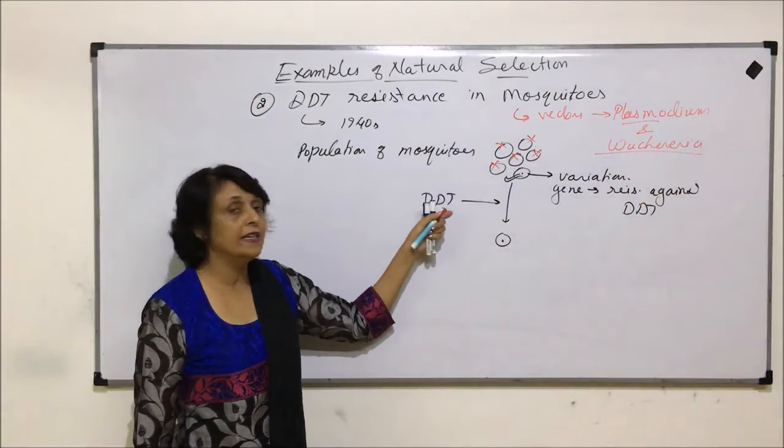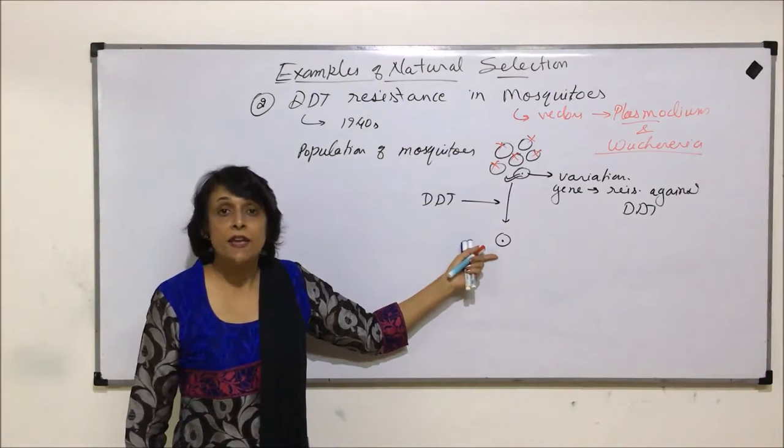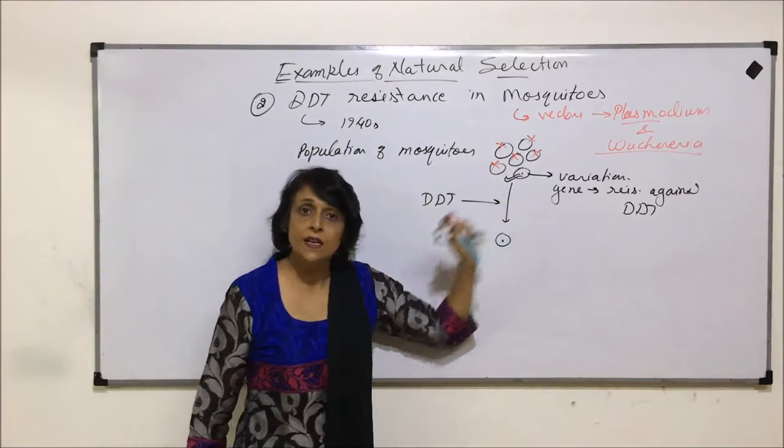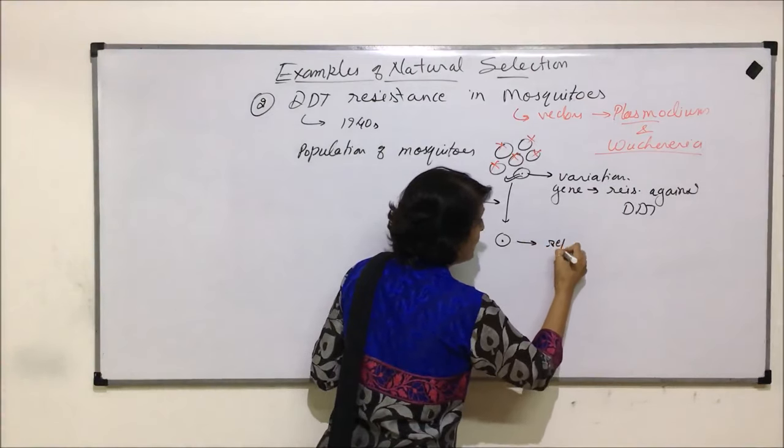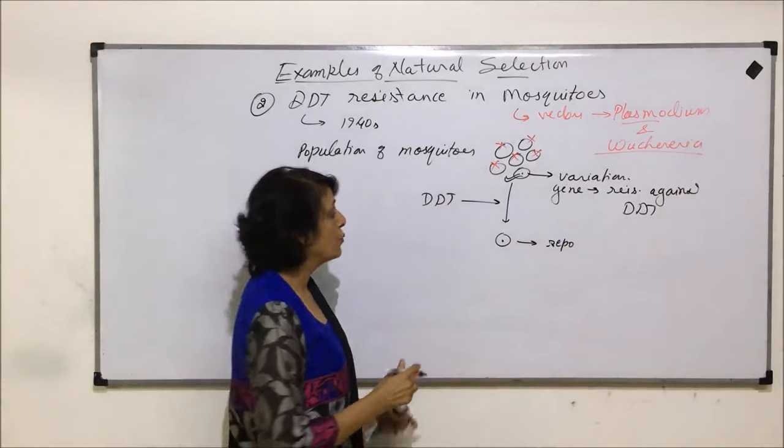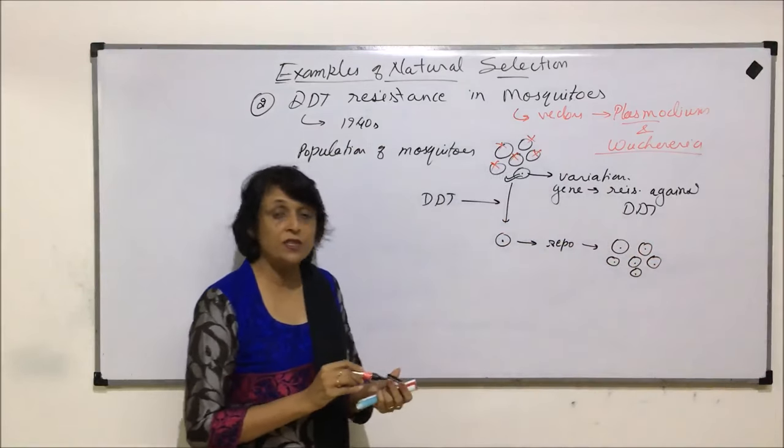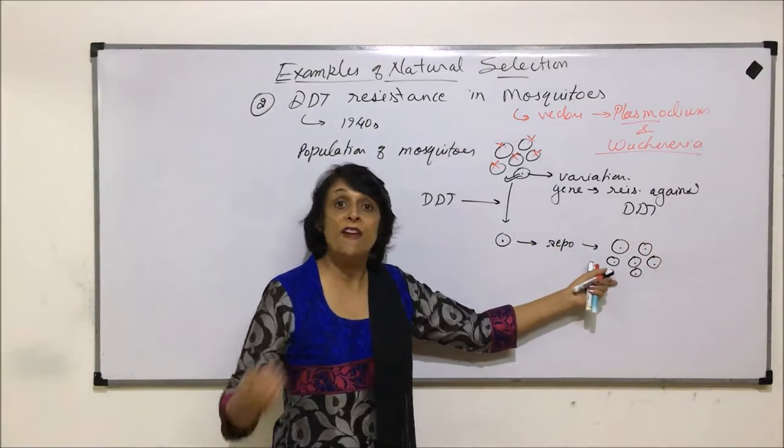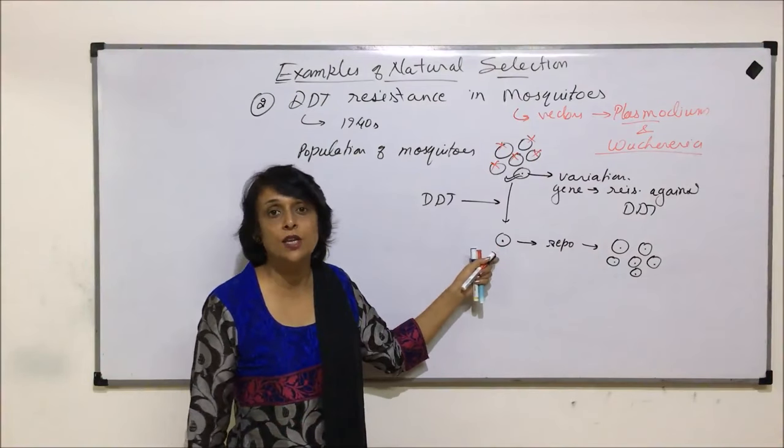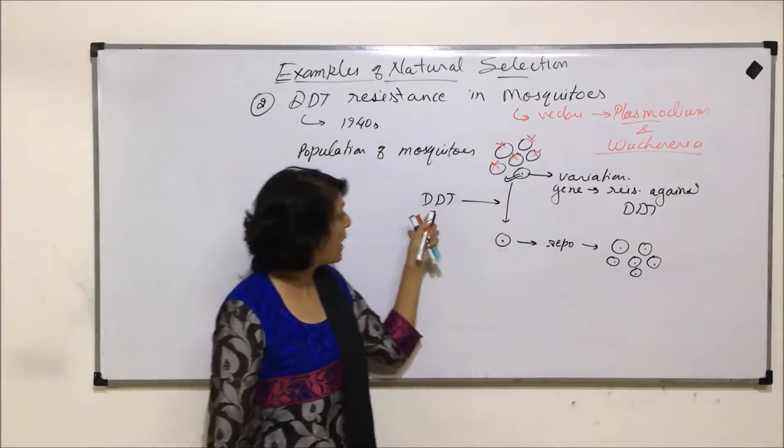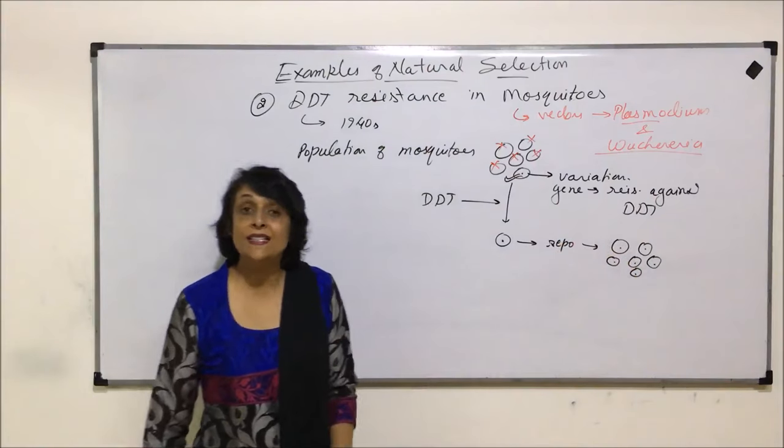All those mosquitoes died and DDT was very effective. The ones, the few which survived, they had this variation in them in the form of the resistant gene. Because they survived, they reproduced. When they reproduced, the same variation was inherited in the next generations. Now, the next generation of mosquitoes which was formed had that gene because those surviving mosquitoes survived because of that gene. So now these varieties, in spite of spraying DDT, were not destroyed. The reason was, now they are called resistant to DDT.